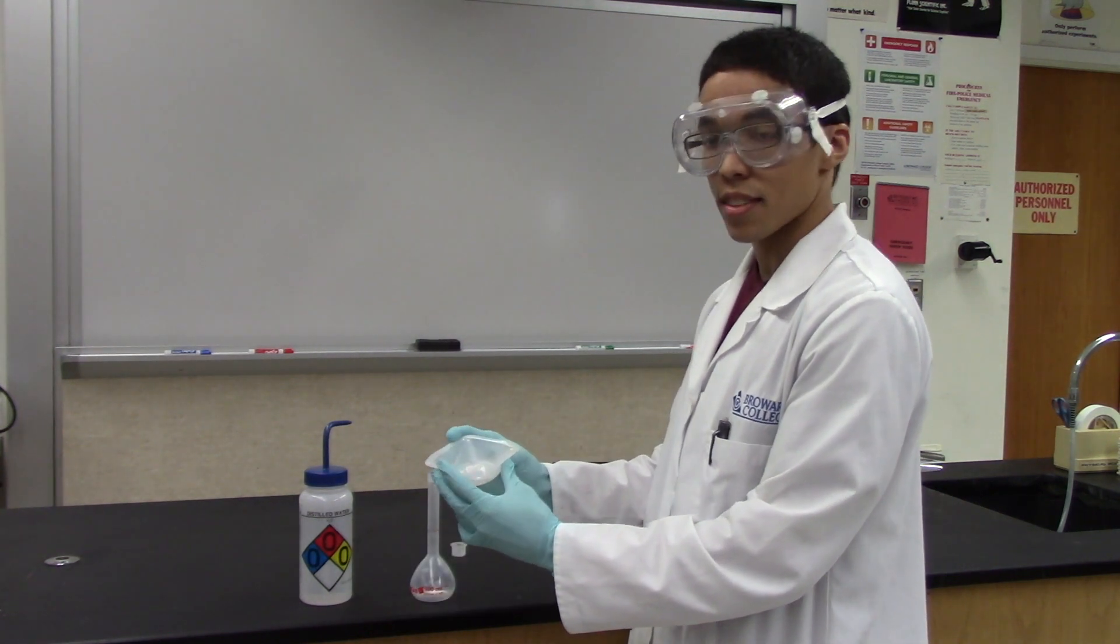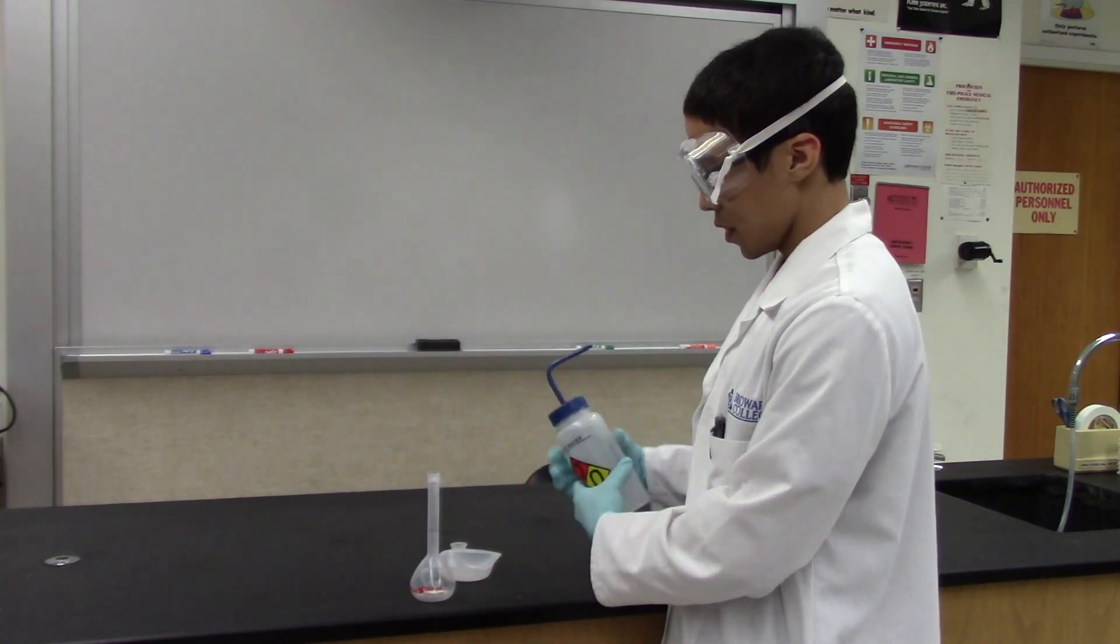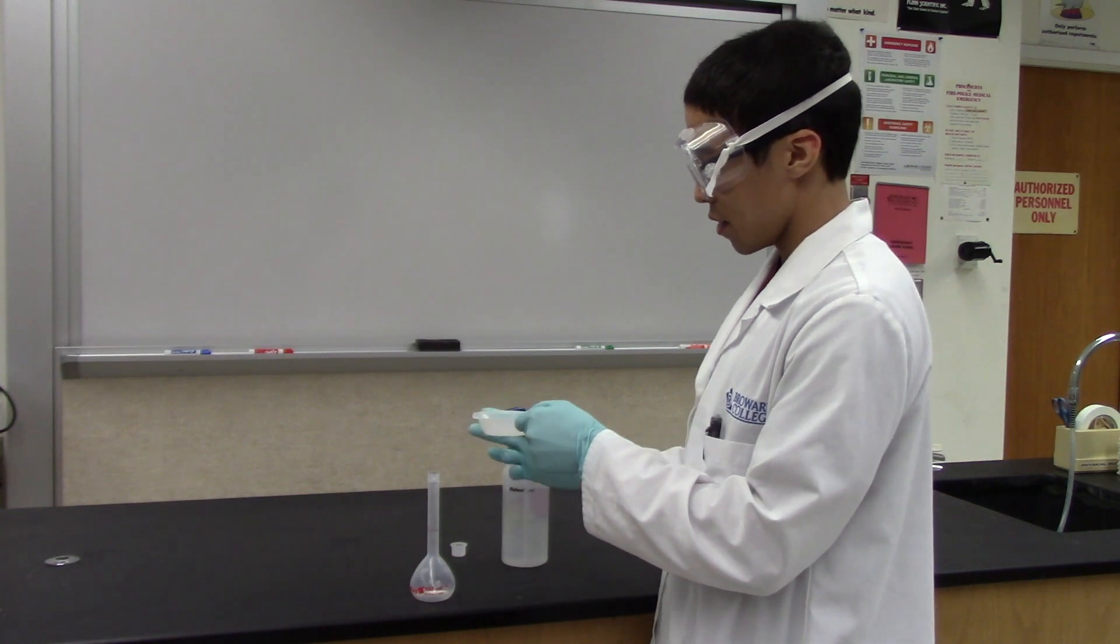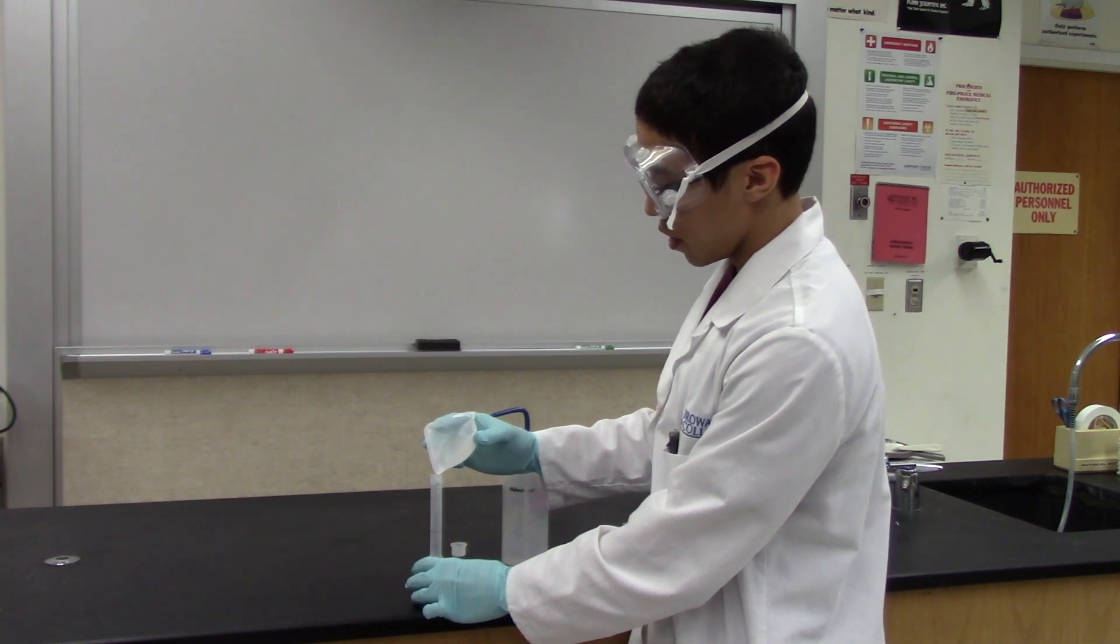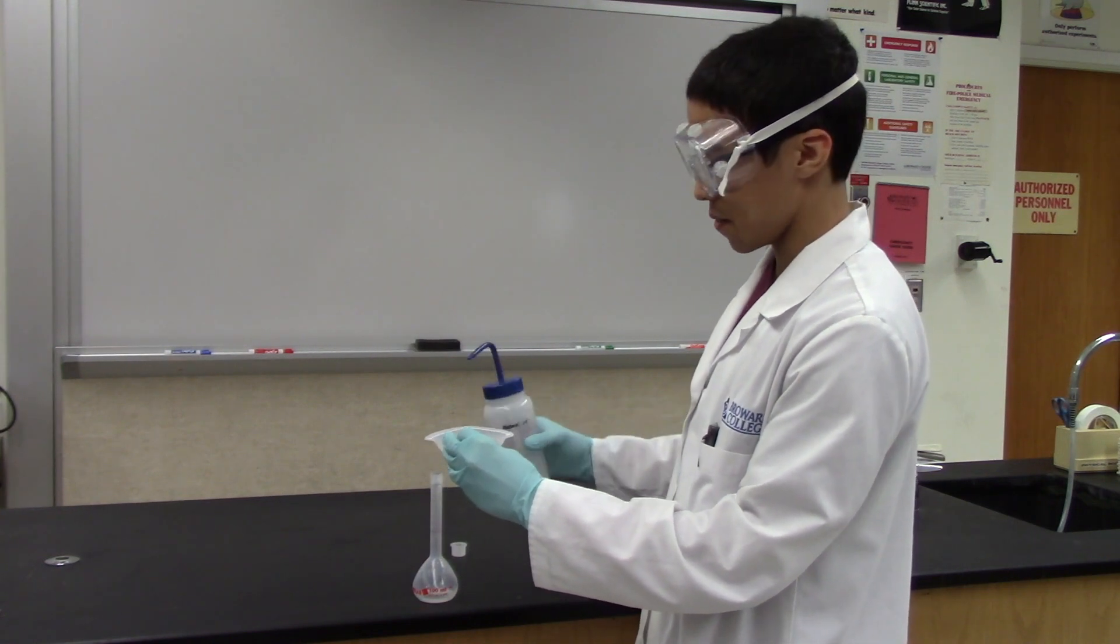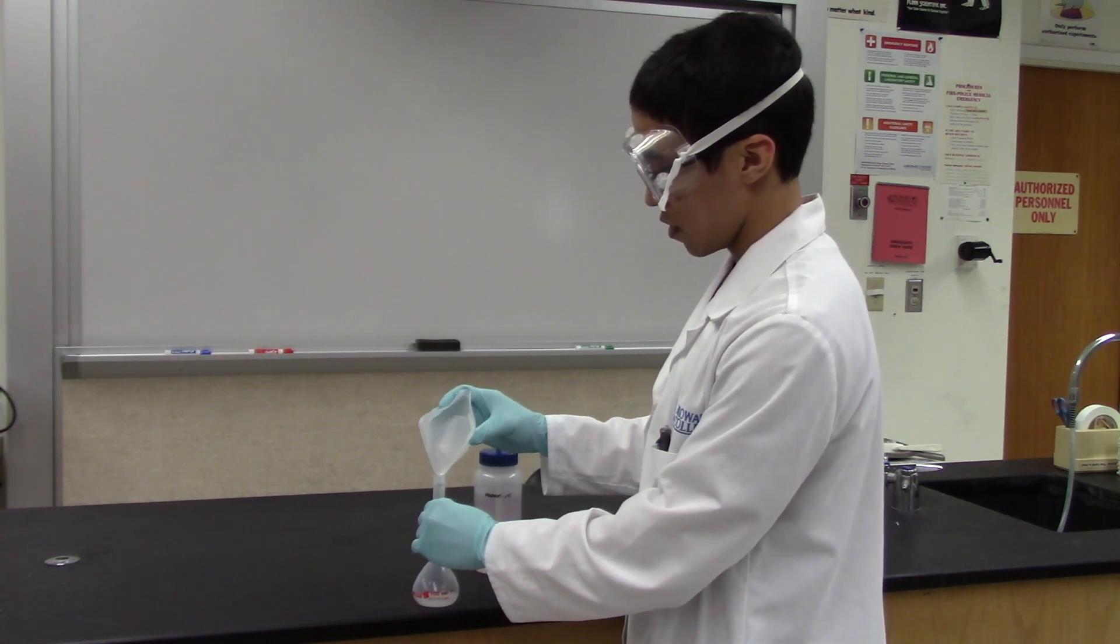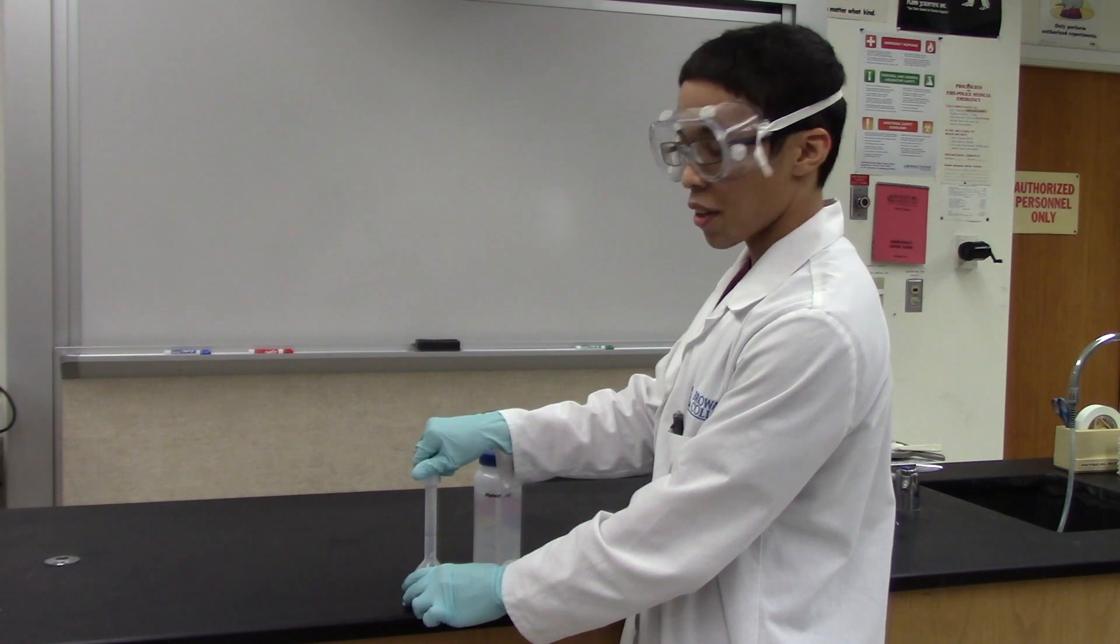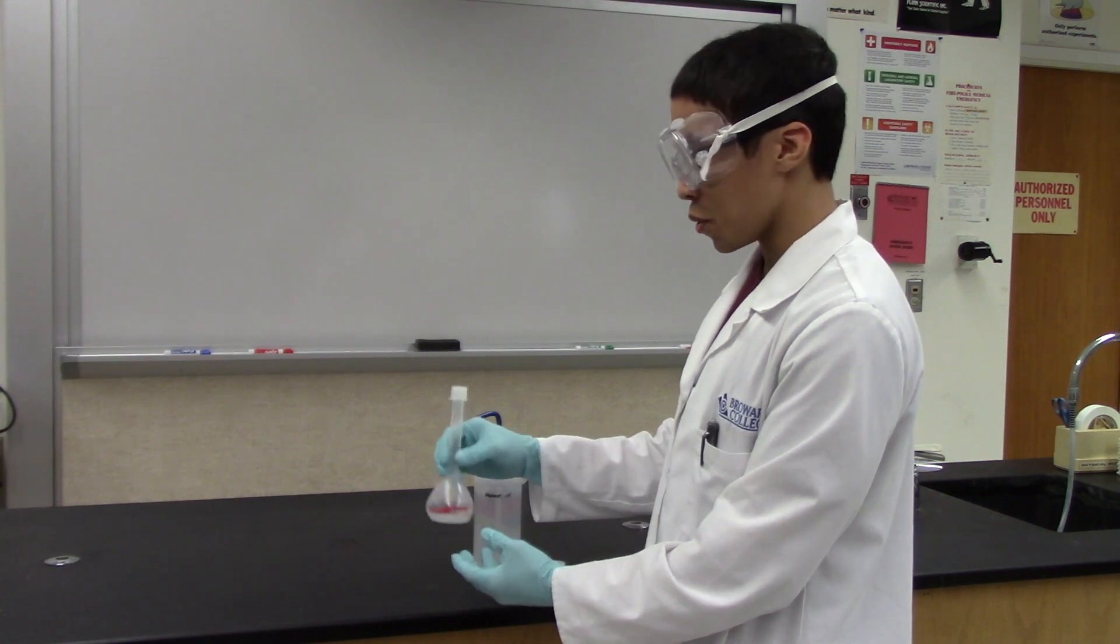Notice how some of the antacid tablet is stuck to the bottom of the weigh boat. You will use distilled water to wash out the weighing boat into the volumetric flask. Try to make sure you get every bit of it into the volumetric flask. More than one rinsing does not hurt. Once all of the antacid tablet has been transferred to the plastic volumetric flask, you will close the volumetric flask using the top and then you will swirl to dissolve.